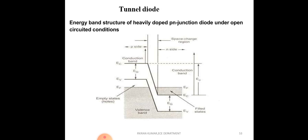When the doping level is high, current is more. If you see the energy band diagram of a heavily doped PN junction diode under open circuit conditions — that means without applying bias voltage — in the tunnel diode you have an N region and a P region forming a junction. There is a junction in the conduction band and valence band. The Fermi level in the N region is in the conduction band, and in the P region the Fermi level is below the valence band.